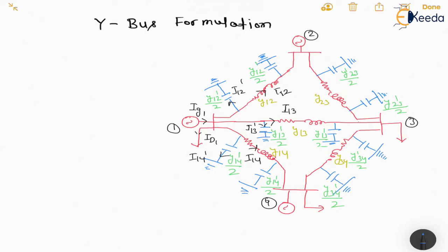It is not that easy — you have to concentrate here and we will study step by step. First, we will understand a few basics. At bus number one, the generated current is ig1 and the demand is id1, so the injected current to the system will be i1, equal to ig1 minus id1. For example, if a generator gives 10 amperes and the load takes 5 amperes, then 5 amperes has been injected into the system.